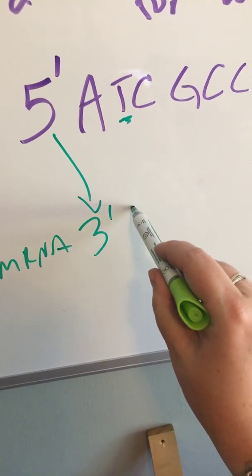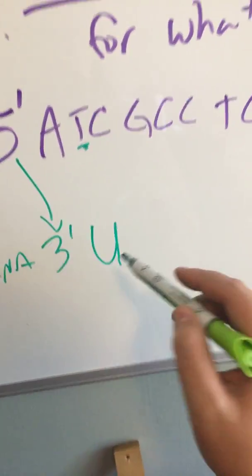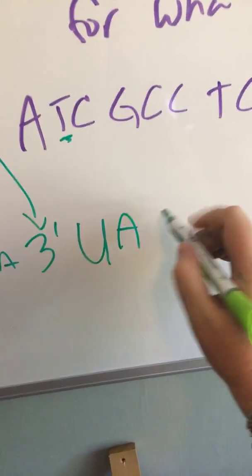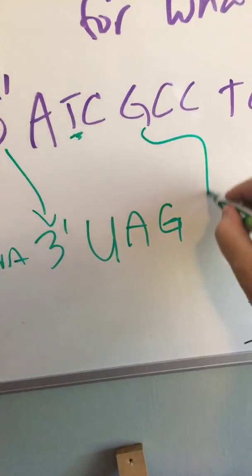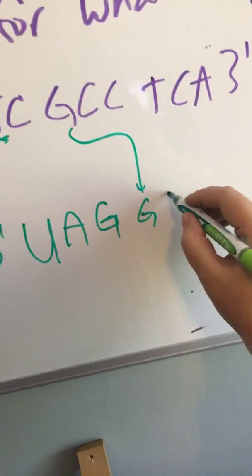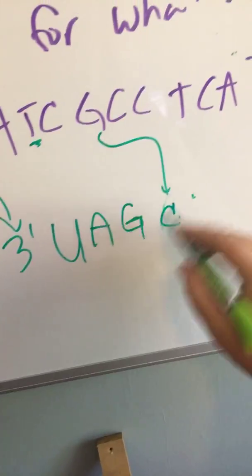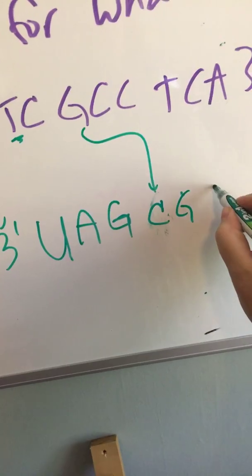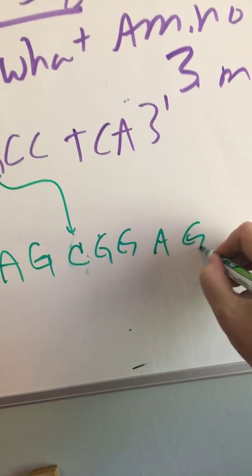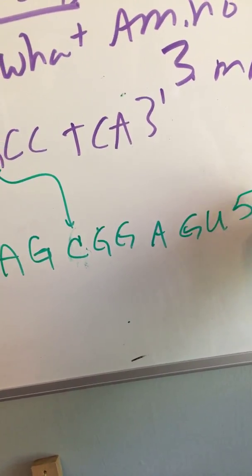If we see a 5', that's going to match with 3'. A is going to match with U because we are in RNA. T matches with A, C matches with G, G matches with C, C to G, C to G, T to A, G to C, A to U, five prime.